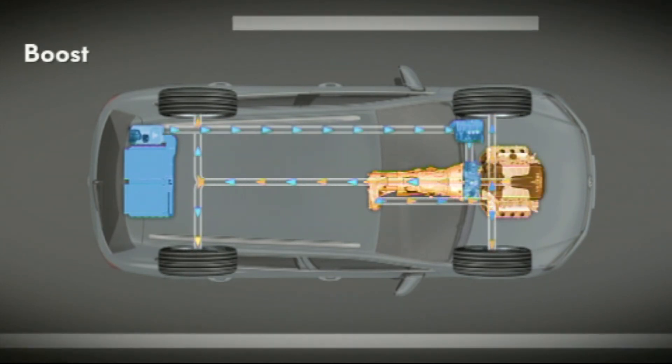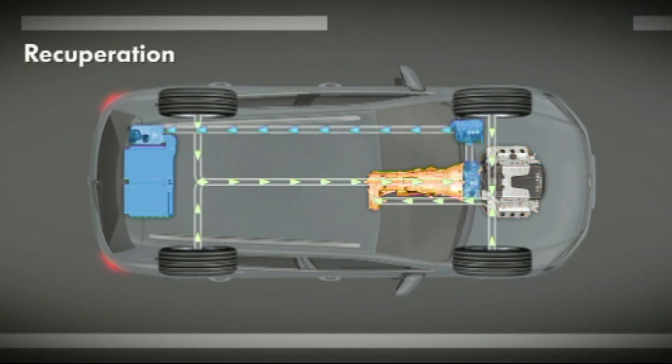However, when a lot of torque is required, for example when the kickdown is used, the TSI engine immediately joins in. When this boost function is used, both the engine and the electric motor work together.